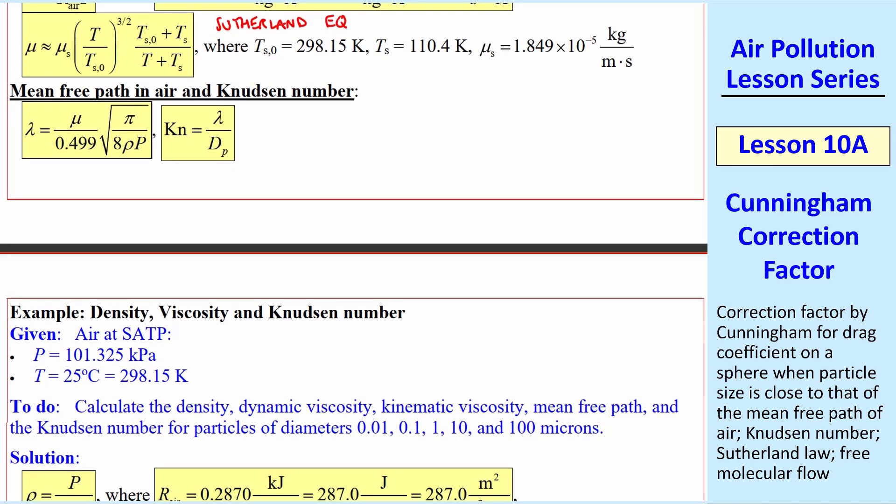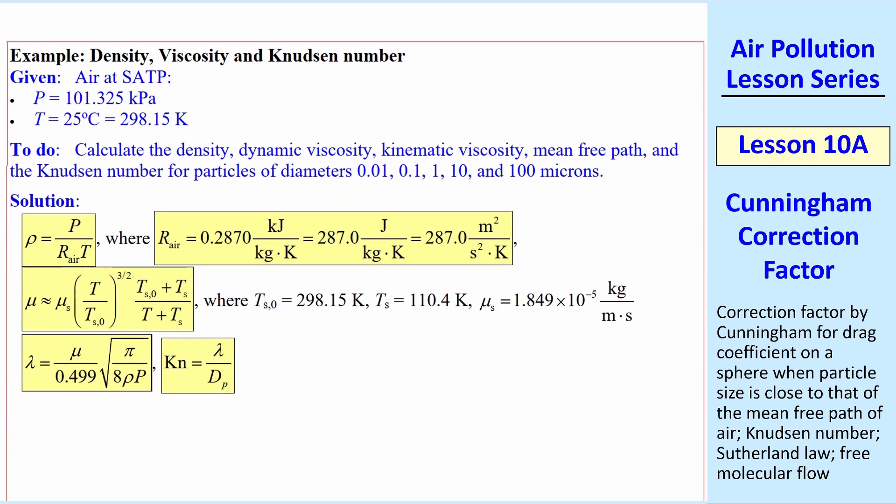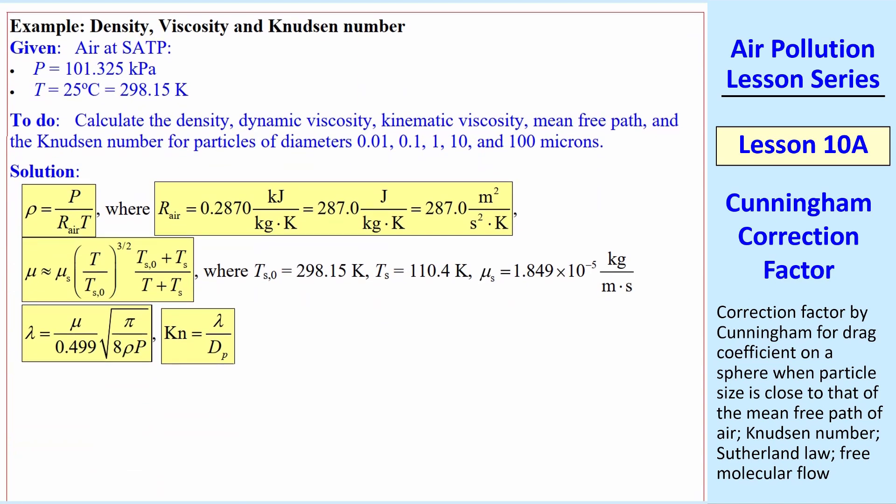I'll do a quick example, where we calculate the density, viscosity, and Knudsen number for air at SATP, which means standard ambient temperature and pressure. The pressure is standard atmospheric pressure, and the temperature is 25 degrees C. In all these equations, we must use K, not C. Always use absolute temperature.